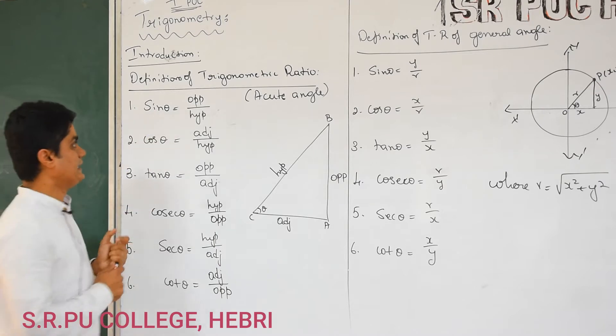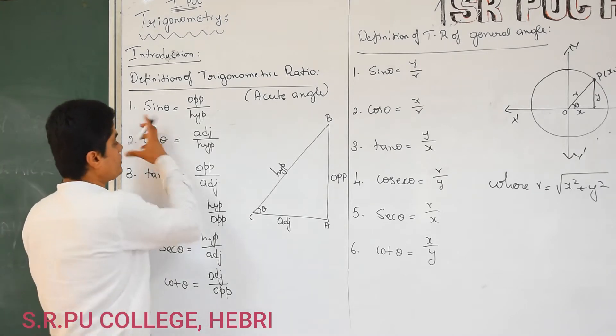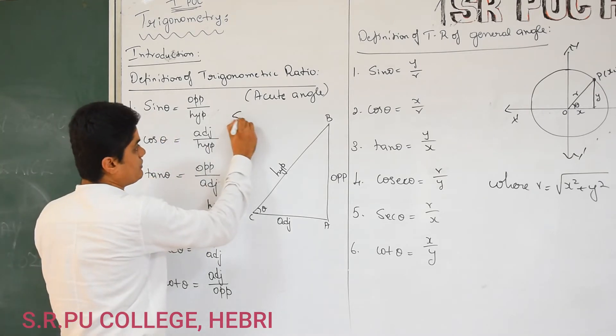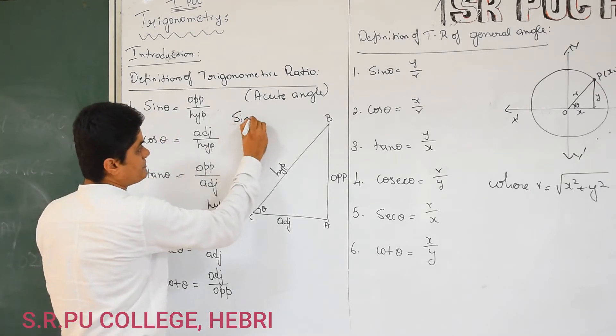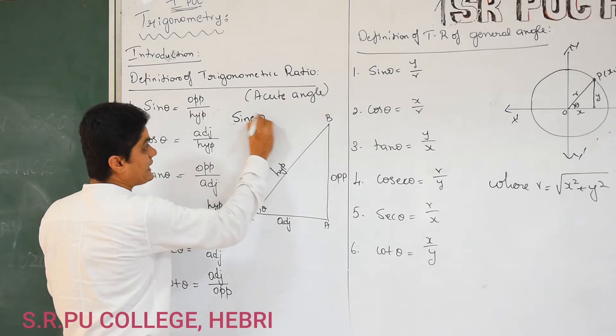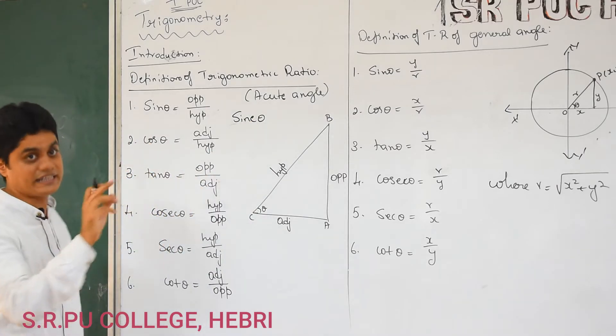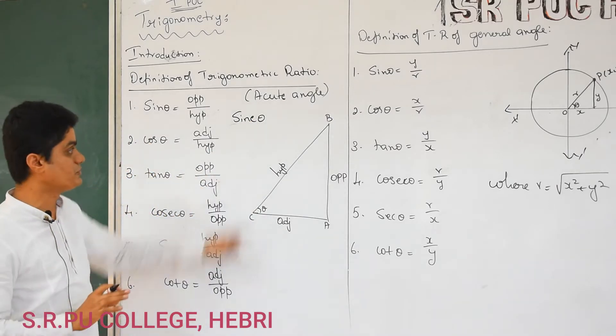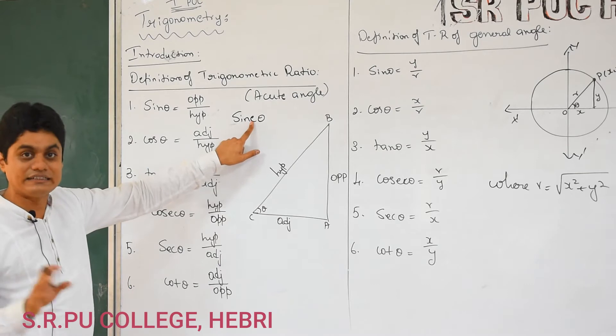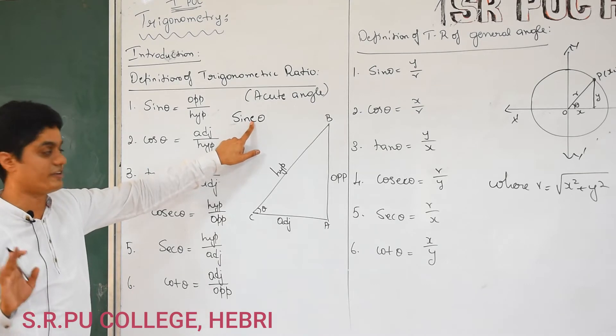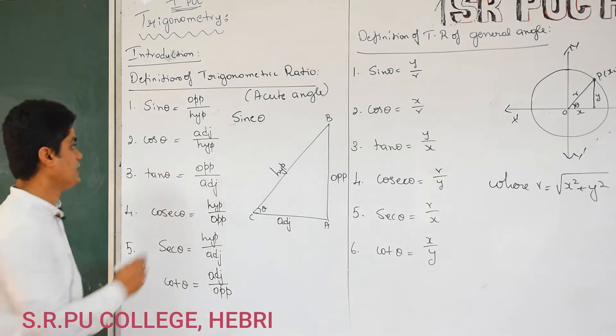Sin theta — this is the short form. What is the actual spelling of sin? S, I, N, E. So if you see anywhere S-I-N-E, don't get confused. It is nothing but the sin function or sin ratio, sin theta.